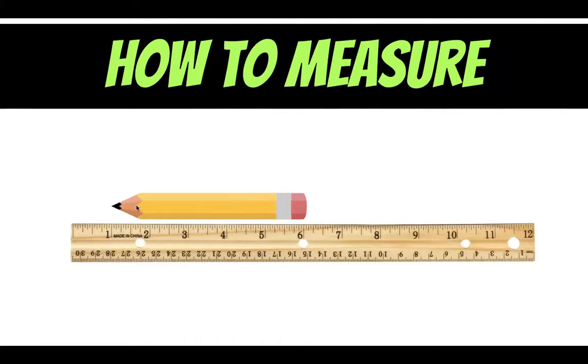Second graders when you're born you're not one right away. You have to live for a whole year before you turn one. When something grows it starts at zero first and then it grows to be an inch and two inches and three inches. So we need to make sure that when we're measuring we are lining up that object with the front of our ruler, that first line. There we go we've got it.